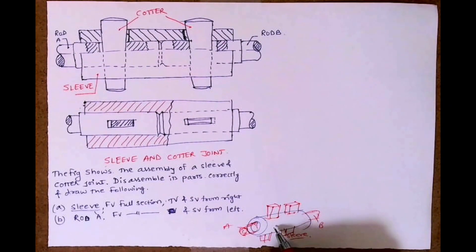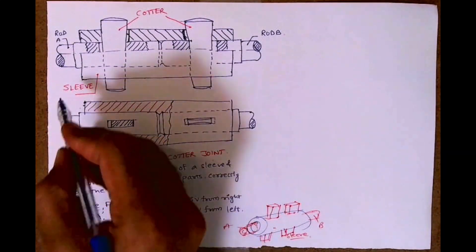So what we need to draw: sleeve, cotter, and rod A. First we'll start with sleeve, and we have to draw right-hand side view.